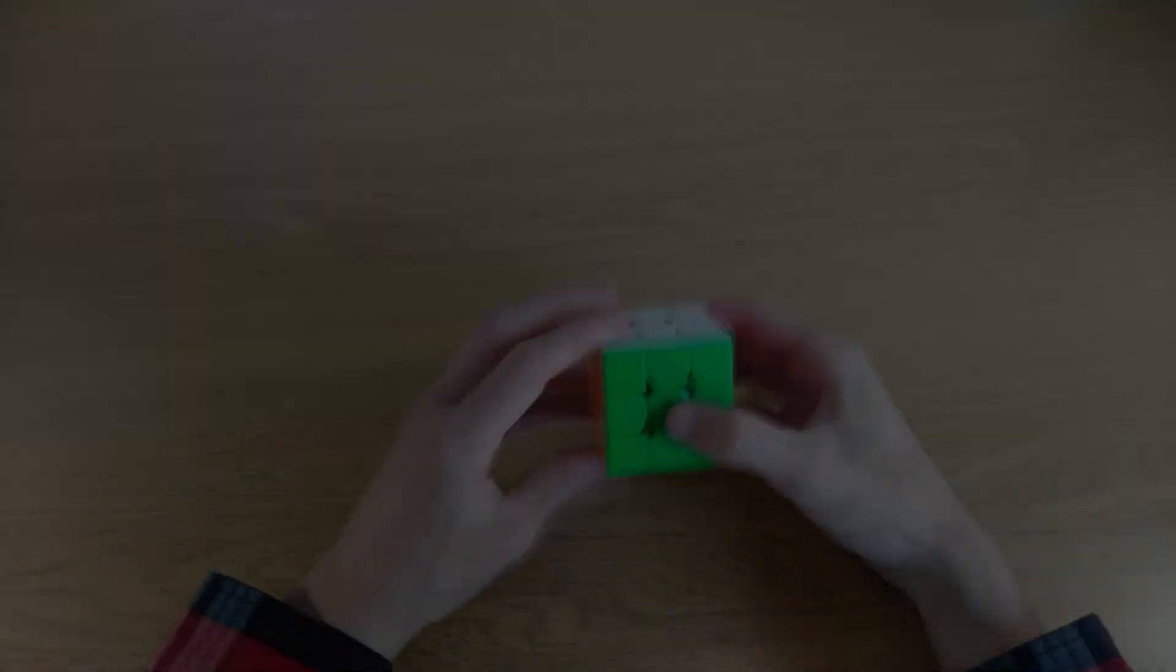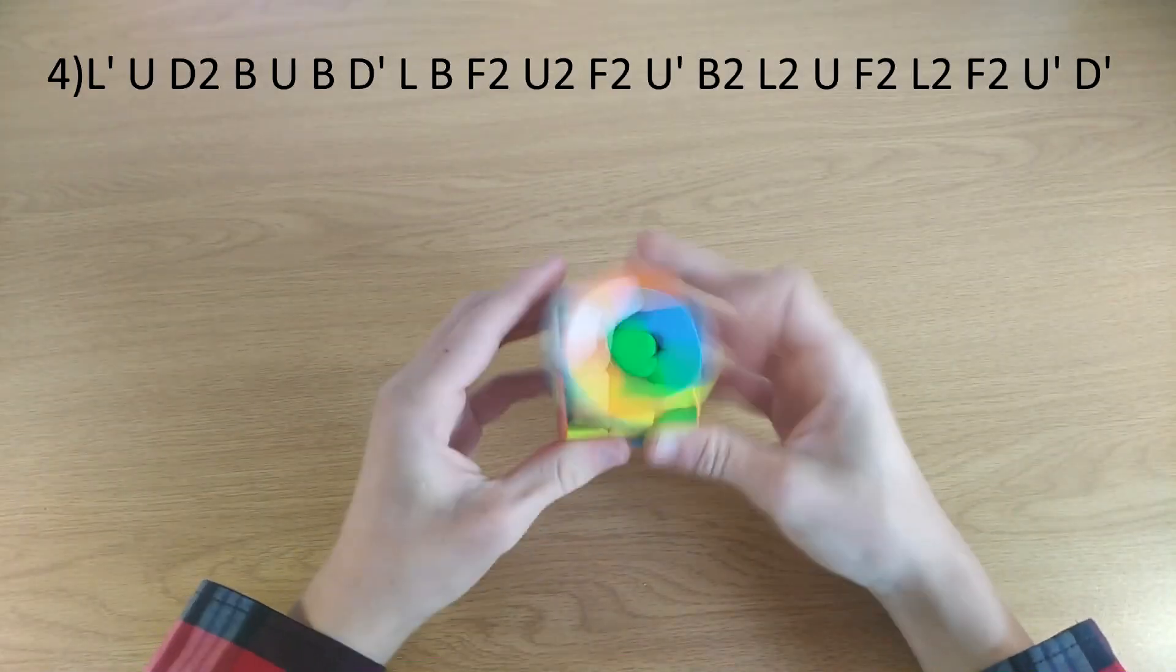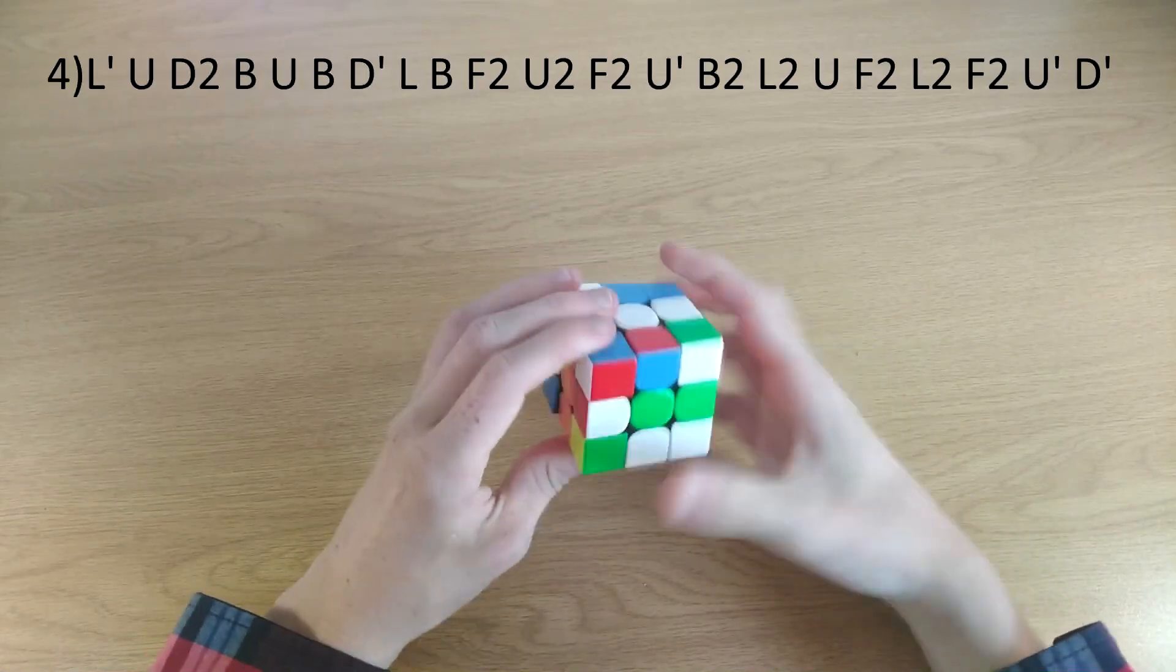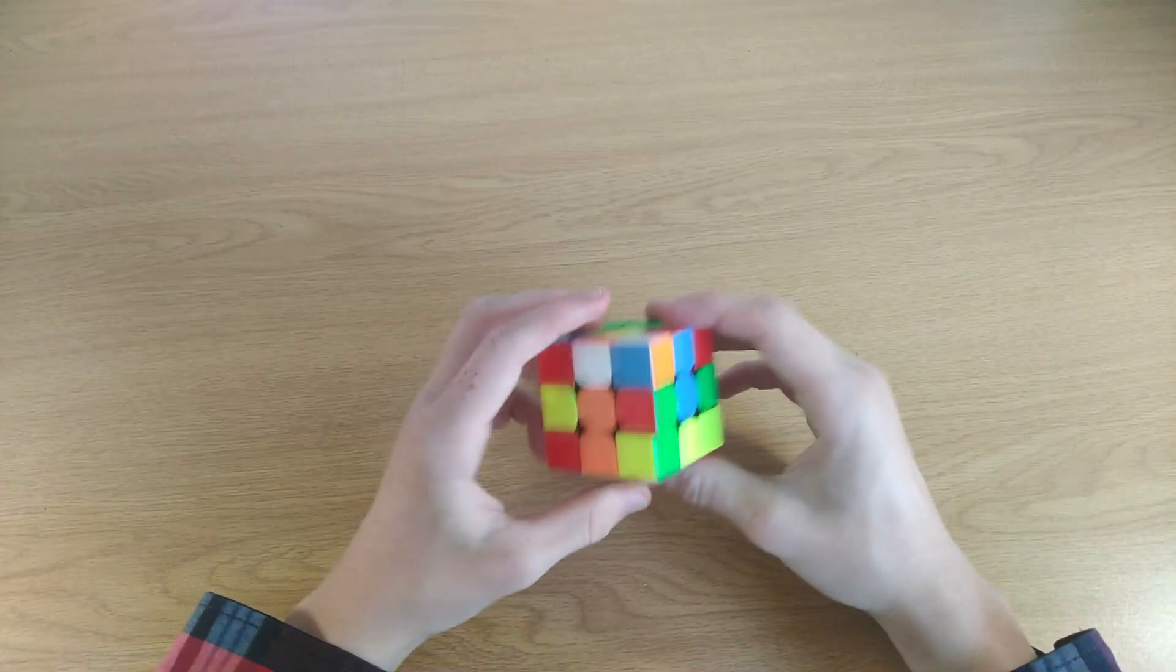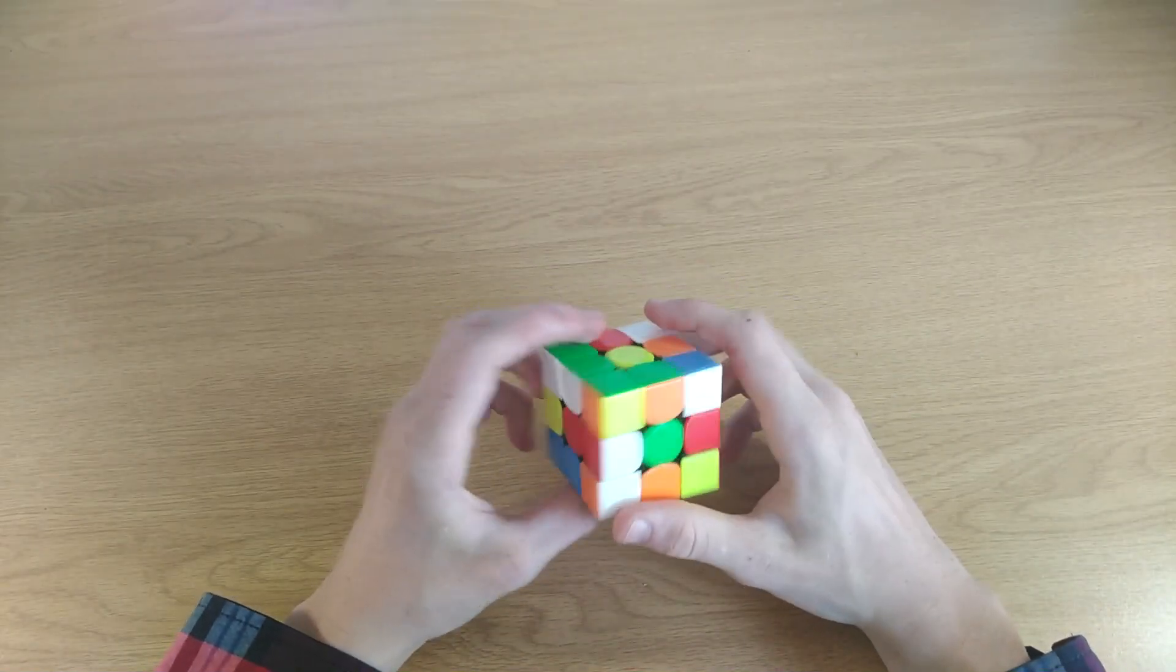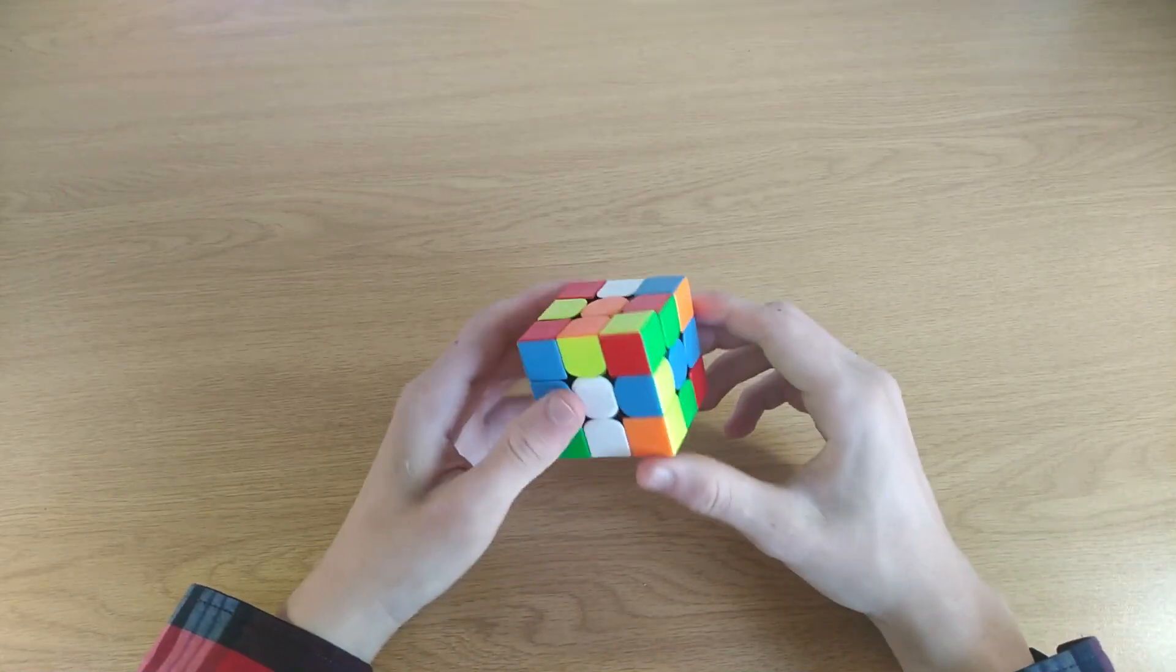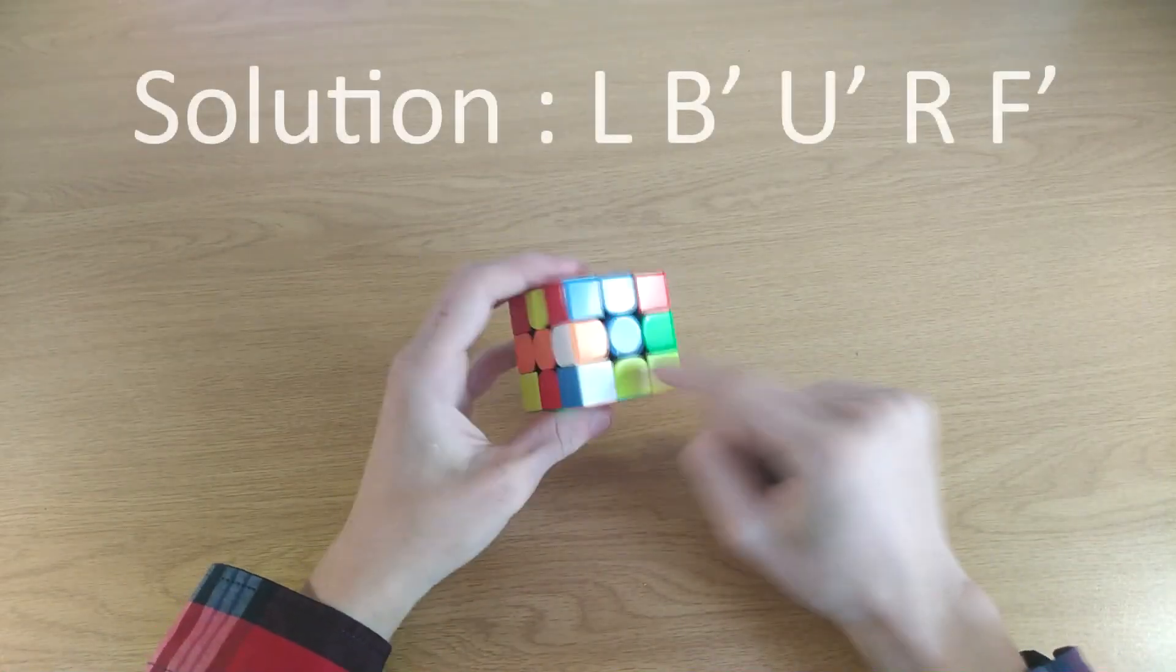So let's start with the fourth example. Now in this one we can do it really quickly. We can do it in five moves. So first of all, here I'm going to do an L because then we can align these two together.